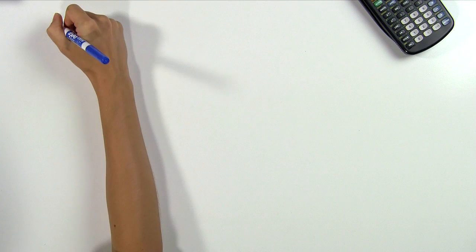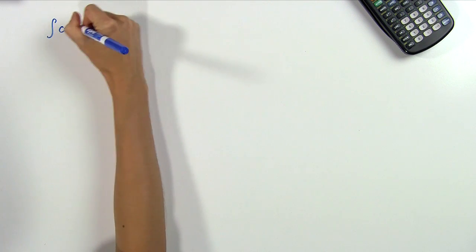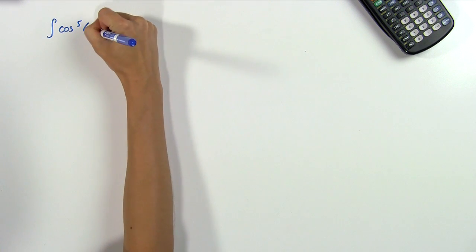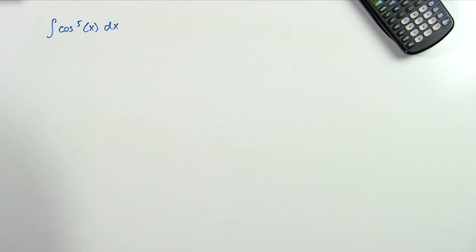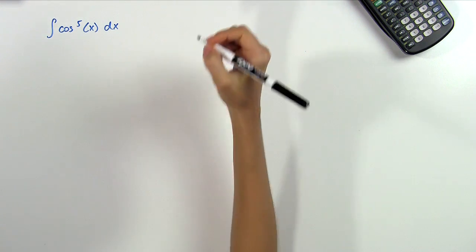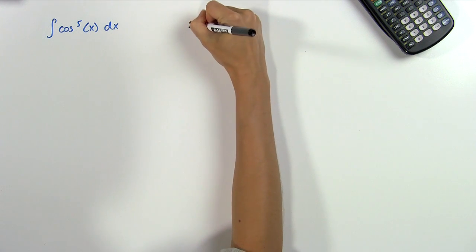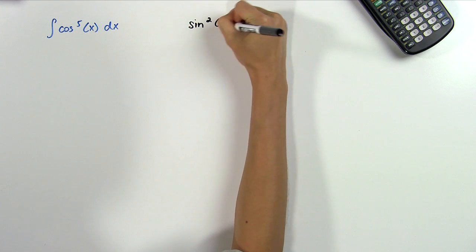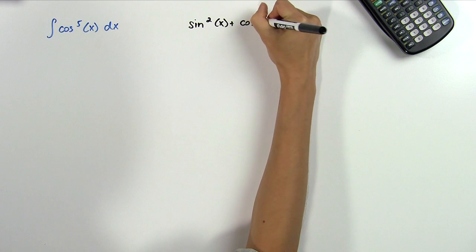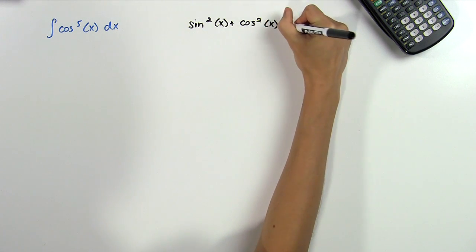Let's start with the odd powers since they're a little easier. Suppose we need to find the integral of cosine to the fifth power of x. The trick to integrating odd powers of sine and cosine is to use the trig identity sine squared plus cosine squared is equal to 1.